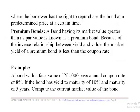A callable bond is the opposite of a putable bond. Here, the borrower has the right to repurchase the bond at a predetermined price at a certain time. That is, the person collecting the bond has the right to repurchase it at a predetermined price.